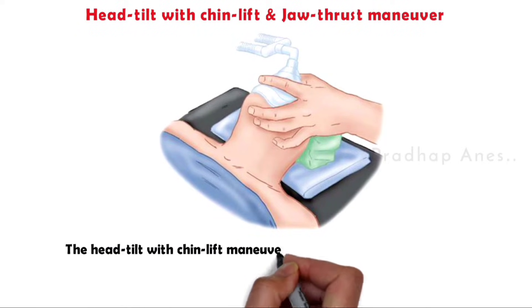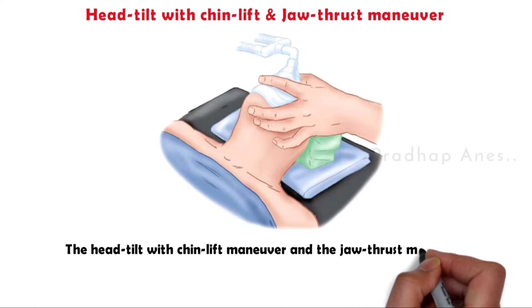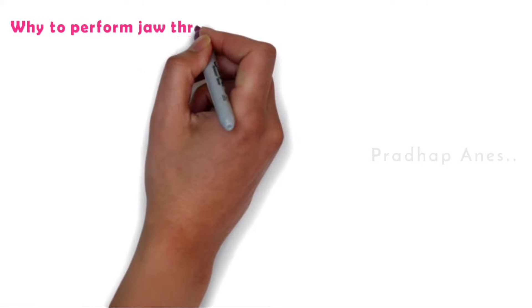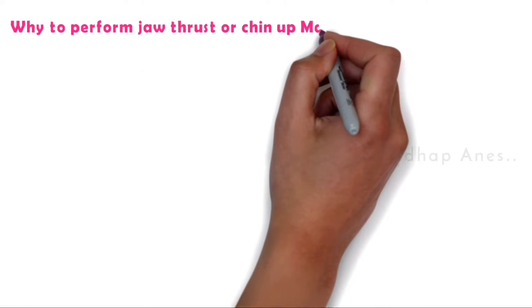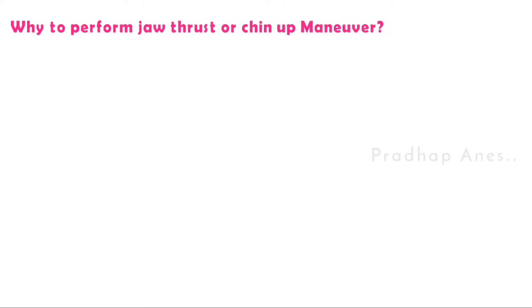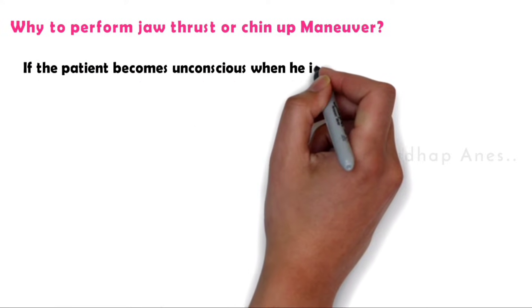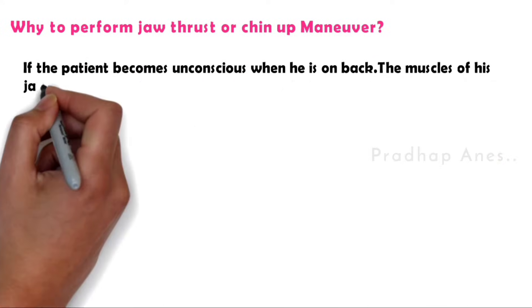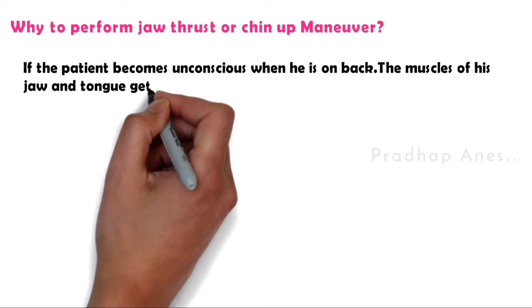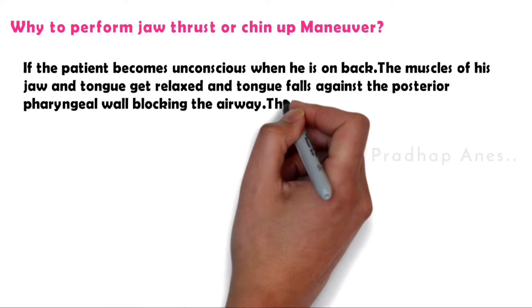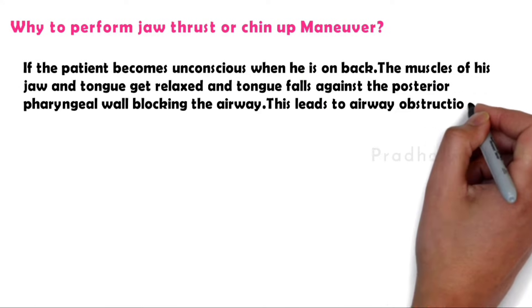The head tilt with chin lift maneuver and the jaw thrust maneuver are two of the main tools of basic airway management. First, we'll know why we have to perform jaw thrust or chin up maneuver. If the patient becomes unconscious when he is on his back, the muscles of his jaw and tongue get relaxed and the tongue falls against the posterior pharyngeal wall, blocking the airway. This leads to airway obstruction.